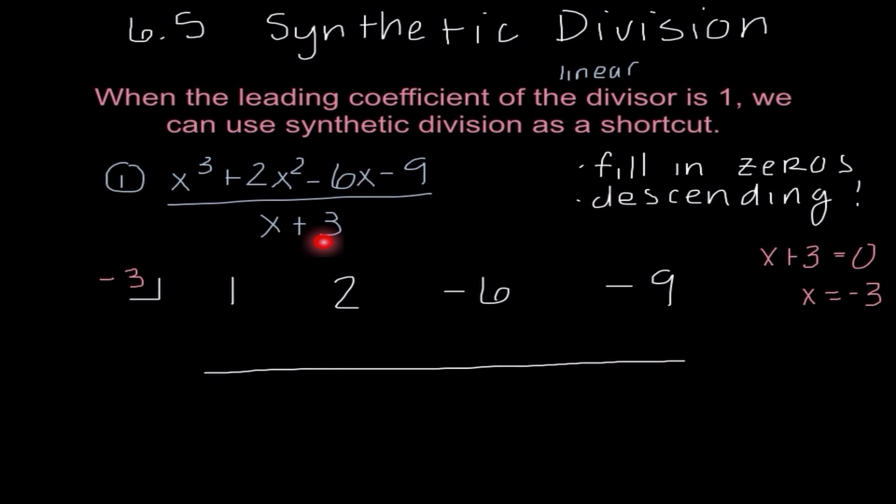Now, our method is identical to what we did last week in our lecture, where I start by bringing down our first number. Now I'm going to multiply 1 times negative 3 is negative 3. When I add, I get negative 1. Negative 1 times negative 3 is 3. When I add, I get negative 3. Negative 3 times negative 3 is positive 9. When I add, I get 0, and that makes me happy.